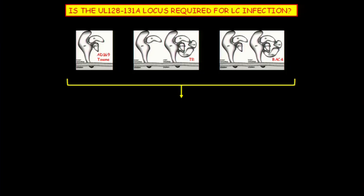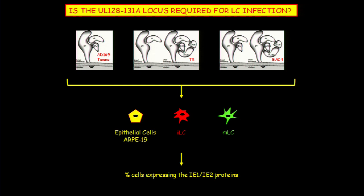We set up to test that using quite a range of different strains. AD169 and Towne, which have gH, gL, and gO; TR, which has the full pentameric complex plus gH and gL but where gO appears to be retained intracellularly and doesn't make it onto the envelope; and BAC4, which has basically everything — gH, gL, gO, and the pentameric complex. We used these strains to infect immature LC, mature LC, and retinal pigment epithelial cells. RPE were used as control. We measured the percent of cells expressing the IE1/IE2 proteins as a measure of susceptibility to infection — a hallmark of productive infection. We wanted to know not just if the virus gets in, but if it can start productive infection.